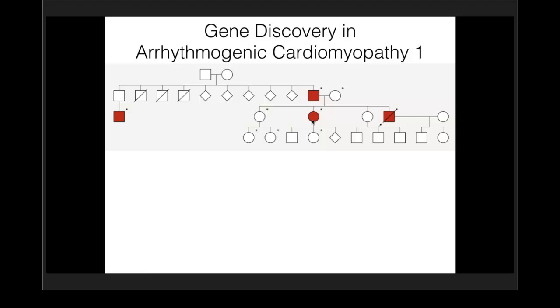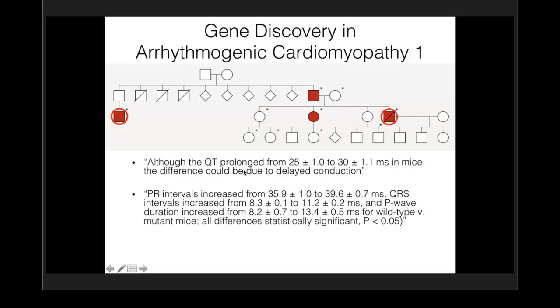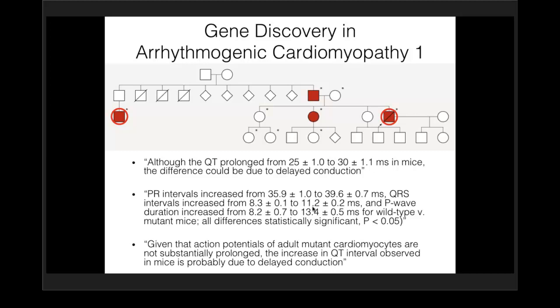We performed whole exome sequencing of these two individuals and identified a gene previously associated with long QT syndrome — one of the very rare causes. Looking at the mouse model, most of the QT interval prolongation was actually related to Q or S prolongation, suggesting this was likely a disorder of depolarization rather than repolarization of the heart in both the mouse model and this family. We're also creating a zebrafish model of this gene defect.